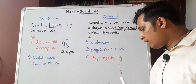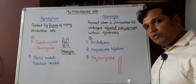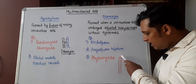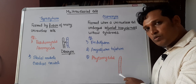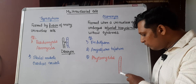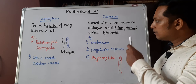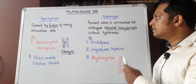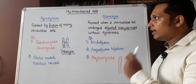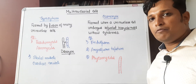Members of Phycomycetes are characterized by synocytic hyphae. Their hyphae form a continuous tube without any septa in between, with many nuclei present in the cytoplasm. This is formed by repeated karyokinesis, hence it is a synocytic example. That covers the topic of multi-nucleated cells.